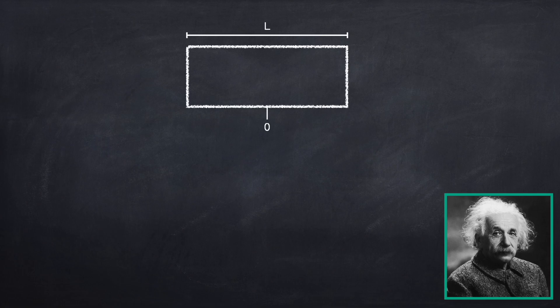Einstein ran a thought experiment in which he had a box of length L. We're going to say that this box is centered at position zero, meaning its center of mass position is zero. Now it was known at the time that atoms could spontaneously emit photons, light particles. So he imagined what happens if a photon is emitted on one side of this box and travels to the other side.